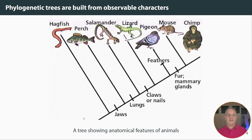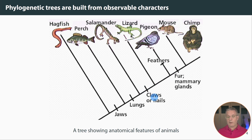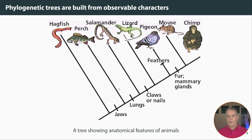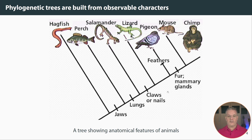More generally, phylogenetic trees are built from observable characters — the products of evolution. Here we see a crude representation of a tree showing anatomical features of various types of animals. What I want to emphasize is that there are points on the tree that represent demarcations of those characters. Only to the right of certain points do the animals have claws or nails, lungs, jaws, and so on. These characters allow evolutionary biologists to describe the tree in terms of how those characters are segregated on one side of the tree or another, and that's an important basis for understanding how phylogenetic trees are drawn.